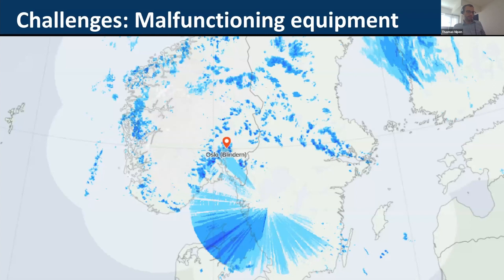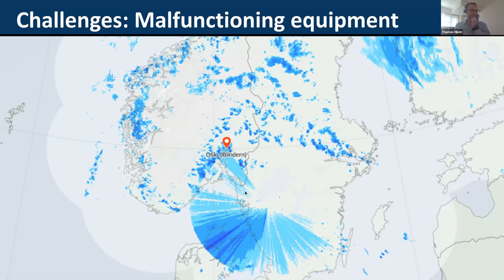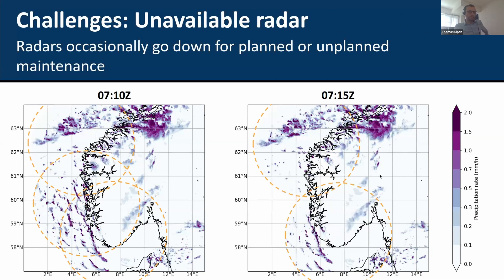Another problem — it doesn't happen often but it does occur — is that radars have some kind of malfunction producing a bizarre radar field. Here's a Swedish radar having some issues. Because our forecasts are fully automated, this kind of stuff enters our forecast and causes some interesting decisions to be made by end users. We have to work quite hard to make sure these errors don't enter our forecast; they're rare but they still happen.